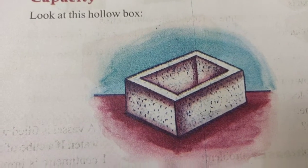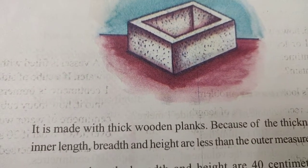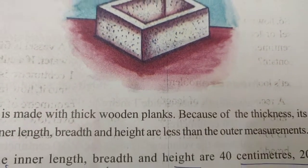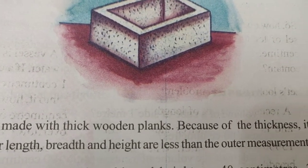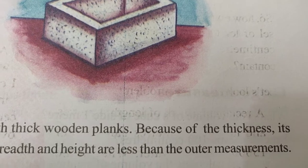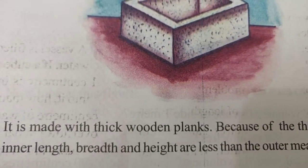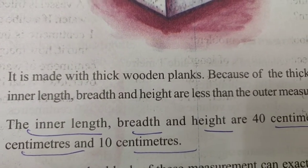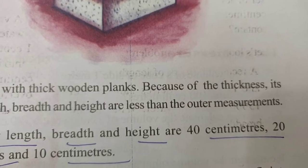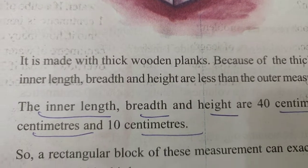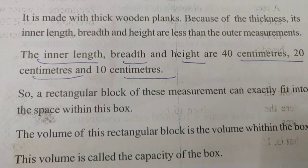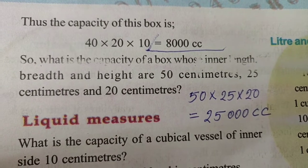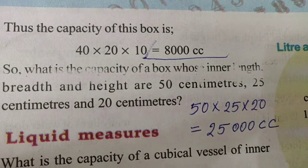The capacity is calculated by removing the thickness. The inner length, breadth, and height are used to find the capacity. The capacity of this box is 40 x 20 x 10.